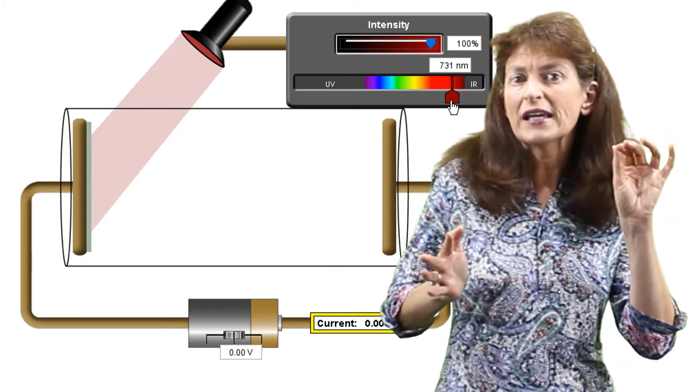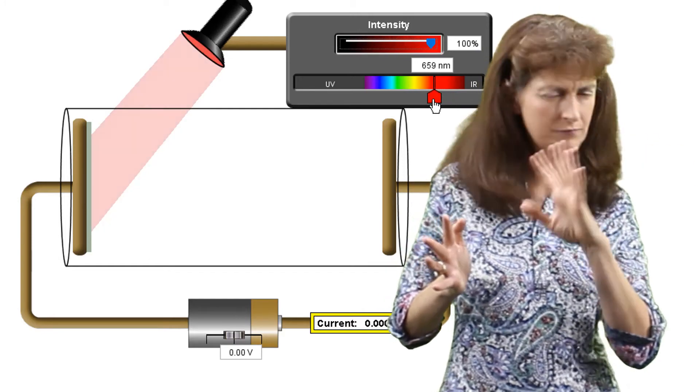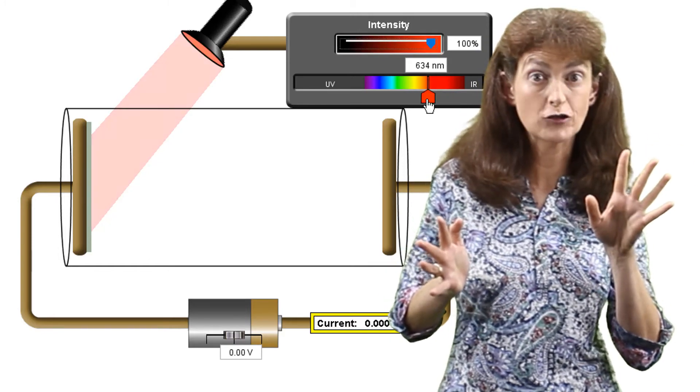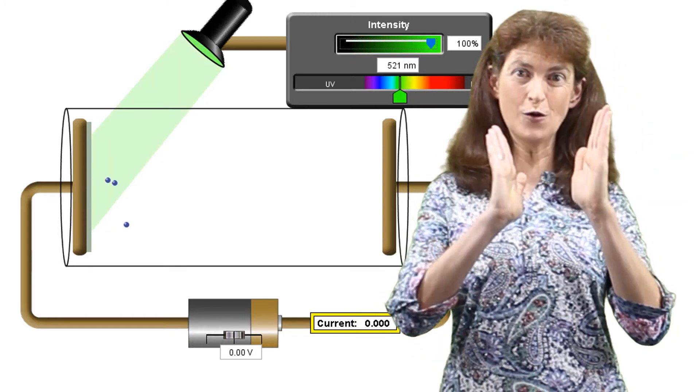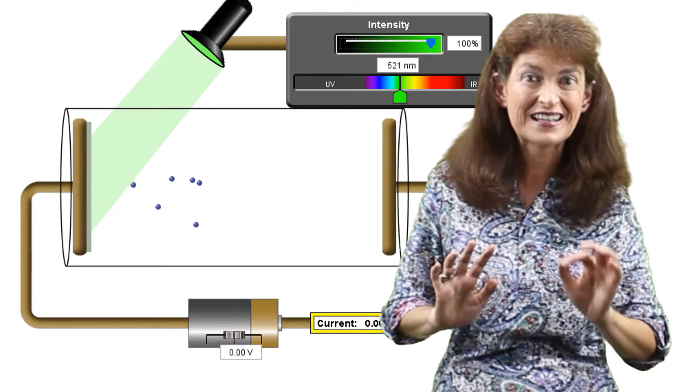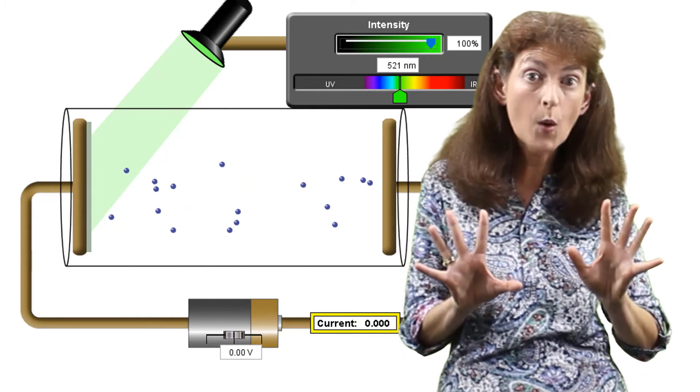So what do we do? We increase the frequency of the light. Still no readings. Still no photoelectric effect. We increase the frequency some more. Increase it until the moment that we start to get the photoelectric effect. We start to get a reading in the circuit. Then we pause.